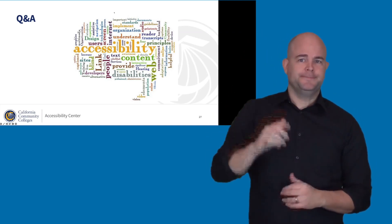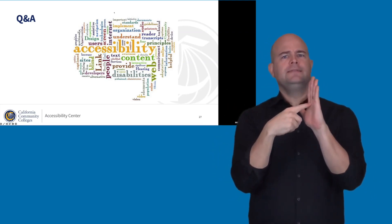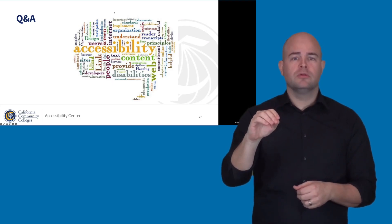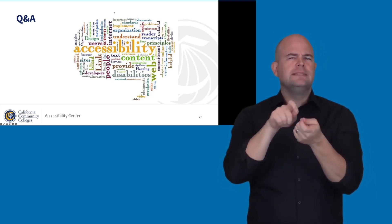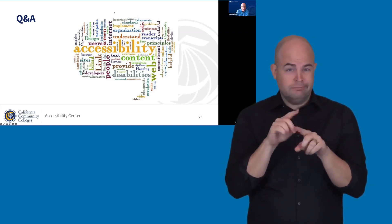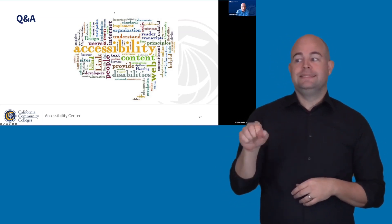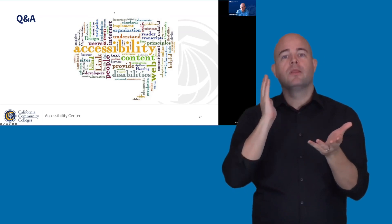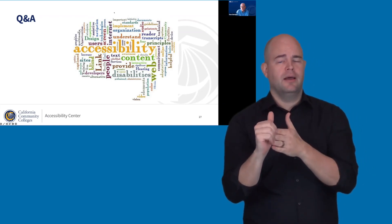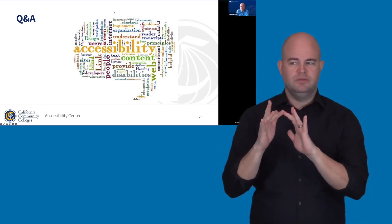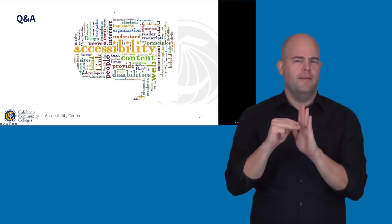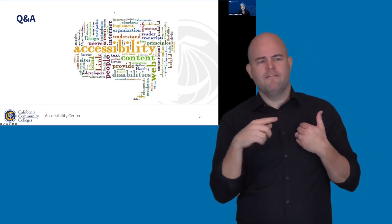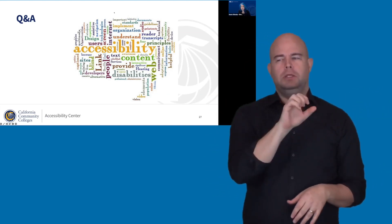Cindy asks: do you have examples of what we should include in our terms and conditions on purchase orders, or accessibility contract stipulations to consider in different situations? The response: stay tuned — that is definitely something we will be developing very shortly and providing to the campuses, perhaps through the implementation guide, or on our website as part of rolling out the capability maturity model. We do have examples but they are not yet tailored to be generic enough for public posting.